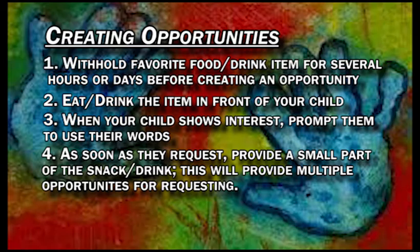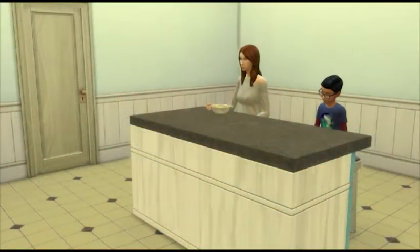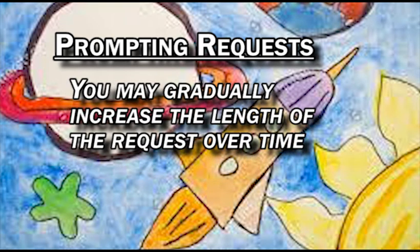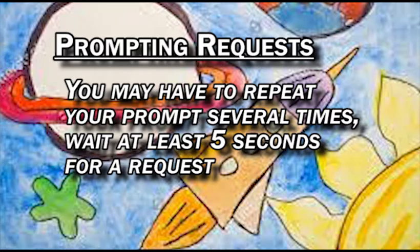Examples of what children might do to indicate interest in an object or activity include looking at a specific item, pointing, reaching, or crying. When you see your child doing this, it is a great opportunity to prompt them to use their words. You can do this by telling them what they should say to get what they want, or asking them what they want.